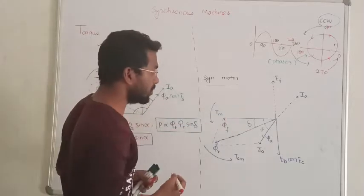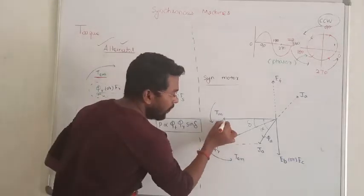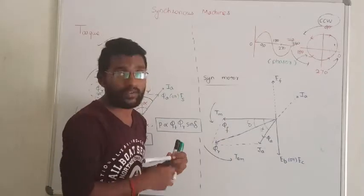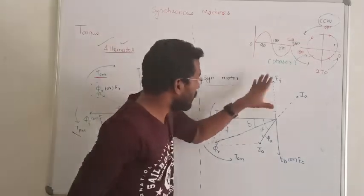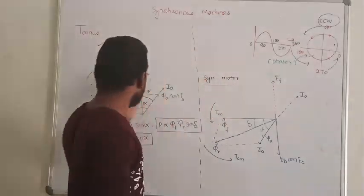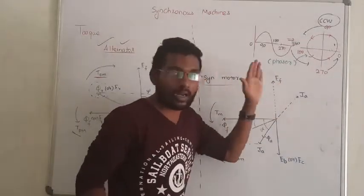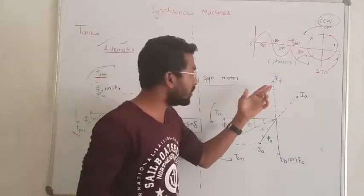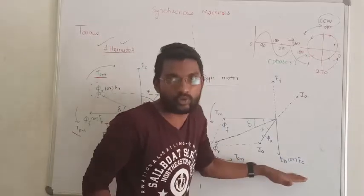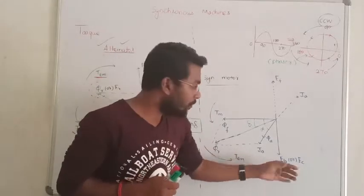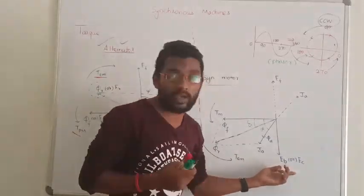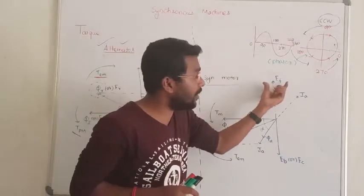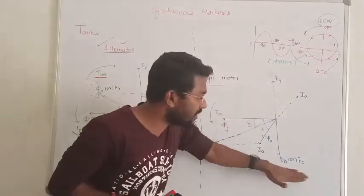Coming back to the synchronous motor — the synchronous motor again has a field flux and field MMF. In the synchronous motor, the field MMF is in the same direction as the synchronous alternator. But in the synchronous motor, the armature current is in the opposite direction. That is the back EMF or counter EMF, and it will produce a back MMF. You will see this in detail in DC machine. In the field MMF, in the development of field MMF, in the same direction, we will fix the synchronous motor.